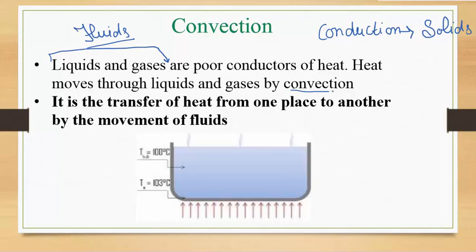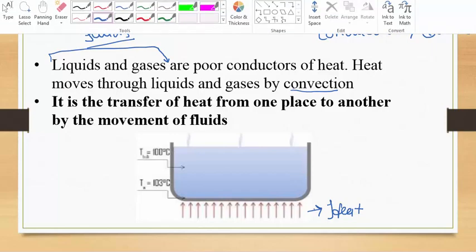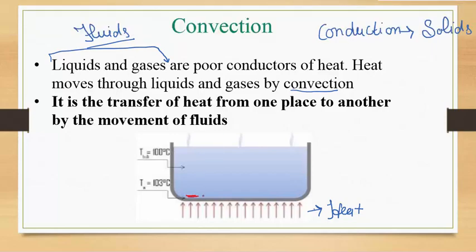What is convection? Convection is the transfer of heat from one place to another by the movement of fluid. Let's discuss this with the help of a diagram. These arrows show heat being transferred to the bottom layer, shown with the red pen. When heat is transferred to this layer, it becomes lighter — its density gets reduced. We know that if an object has less density it starts floating on a higher-density object, so this heated layer starts moving upward.